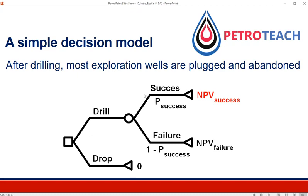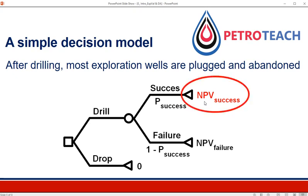We are not sure if the hydrocarbons exist in the formation. With some probability we will be successful, and if we are successful we will get a reward — that's the NPV of success. If we are not successful, then we will have to pay the cost of drilling, which is the NPV of failure. So what is the NPV of success? Let's dig deeper into its elements.